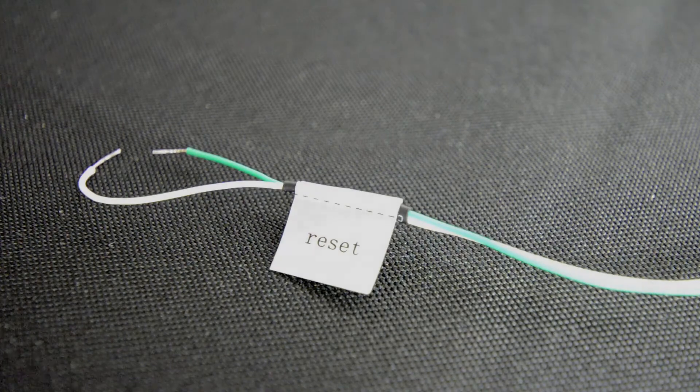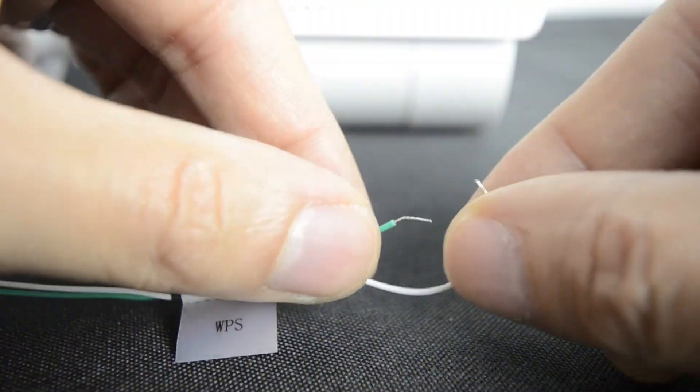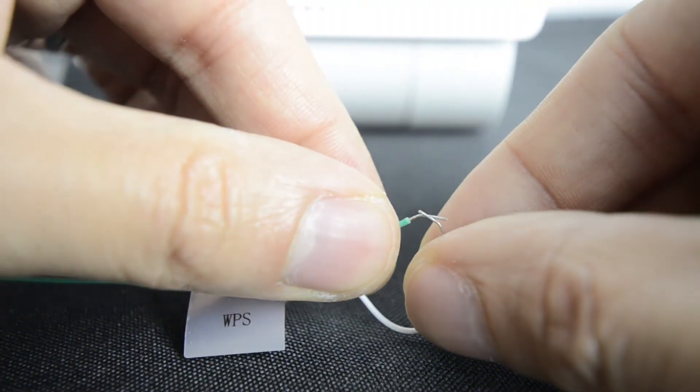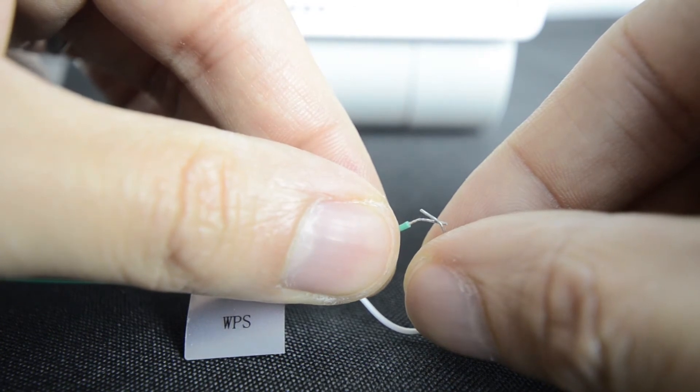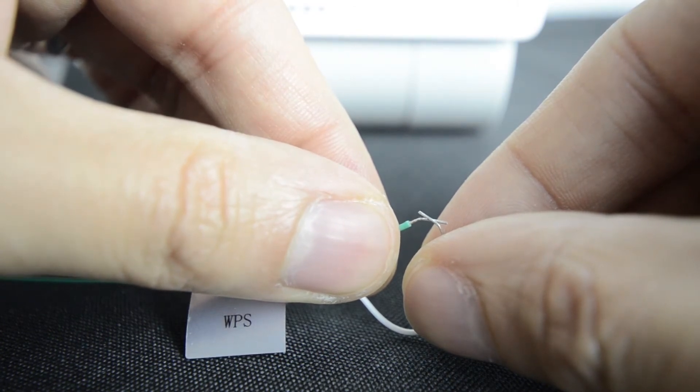To perform a factory reset, touch the green and white wires together for at least five seconds. Please note, this will reset the camera back to its factory default settings.